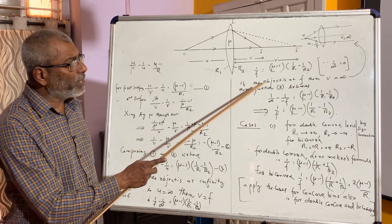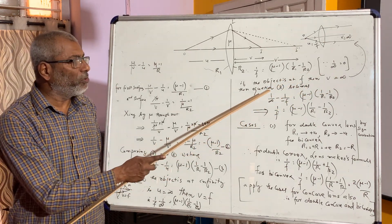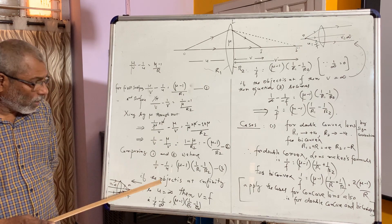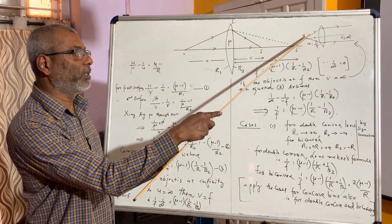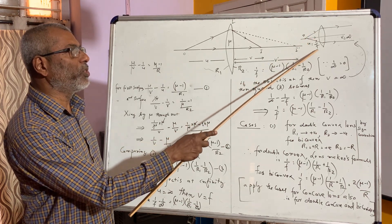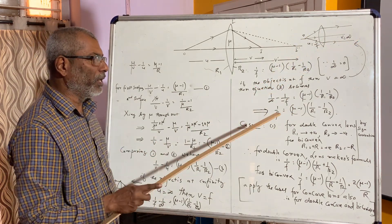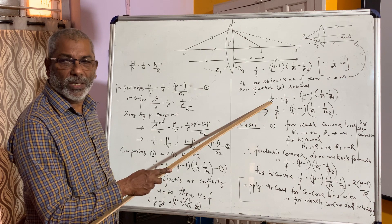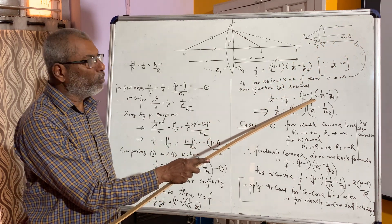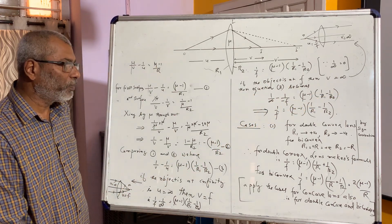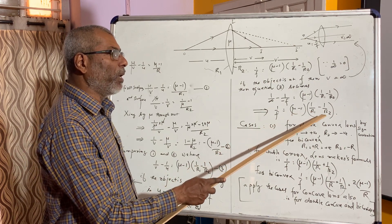As a second condition, if the object is placed at the focus, then V is equal to infinity. By sign convention, U is equal to minus F and V is equal to infinity. Then equation 3 becomes: 1/infinity minus 1/(minus F) equals (μ minus 1)(1/R1 minus 1/R2). So finally we again get: 1/F is equal to (μ minus 1) into (1/R1 minus 1/R2).